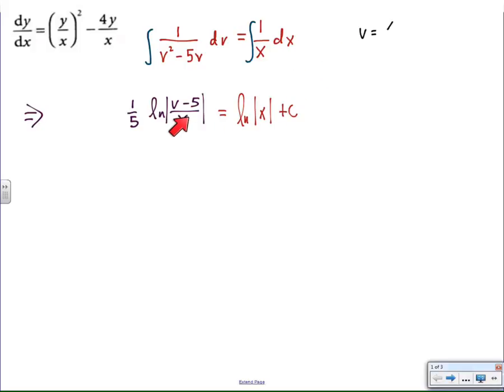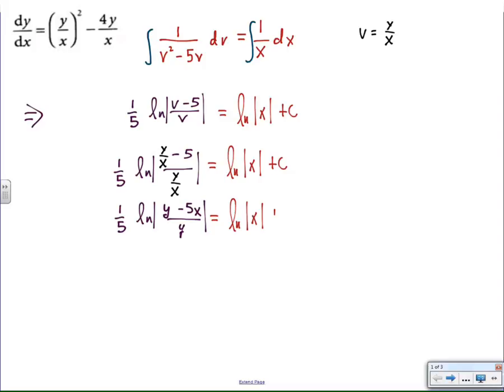So anyway, just to complete the process, we have v as some unknown function of x. We're going to solve for v. Remember, what we said earlier was v times x is equal to y. Now we solve for v, get y/x. So we put that back where it belongs, and we multiply top and bottom by x to make a nicer-looking expression. So that is the general solution to the differential equation.